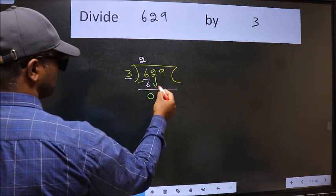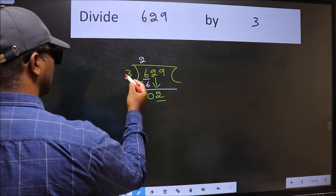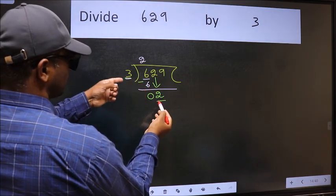After this bring down the beside number. So 2 down. Now here we have 2 and here 3. 2 is smaller than 3.